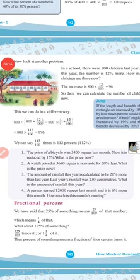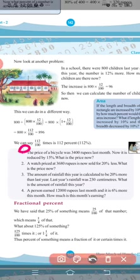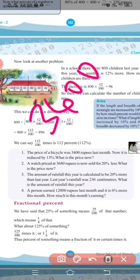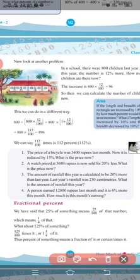Let us do the problems on page number 143. First question: the price of a bicycle was 3,400 rupees last month. Now it was reduced by 15%. What is the price now? Price of bicycle is 3,400. Reduction percentage is 15%, so price percentage is 100 minus 15, that is 85 percentage. So new price is 3,400 into 85 by 100.